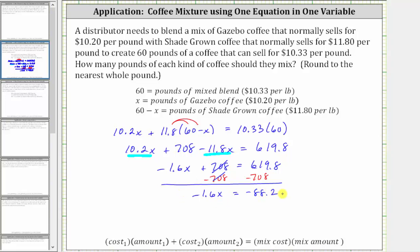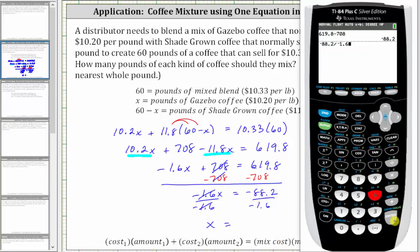The last step to solve for x is to divide both sides by negative 1.6. Simplifying on the left, negative 1.6 divided by itself simplifies to 1, so 1 times x is x. We have x equals negative 88.2 divided by negative 1.6, which equals 55.125.